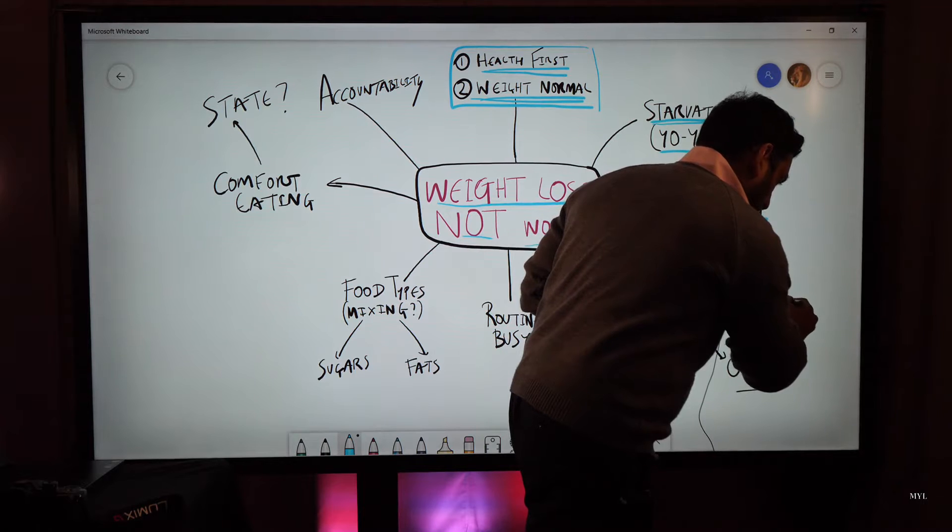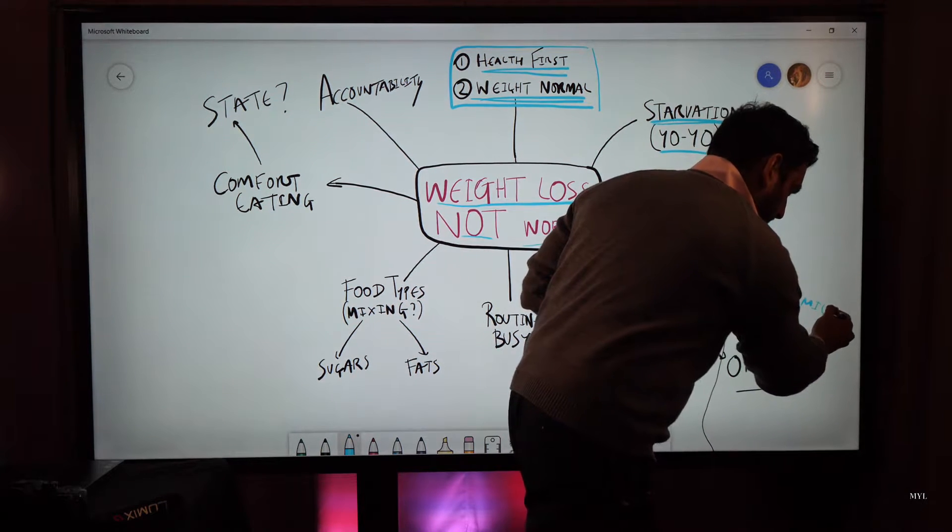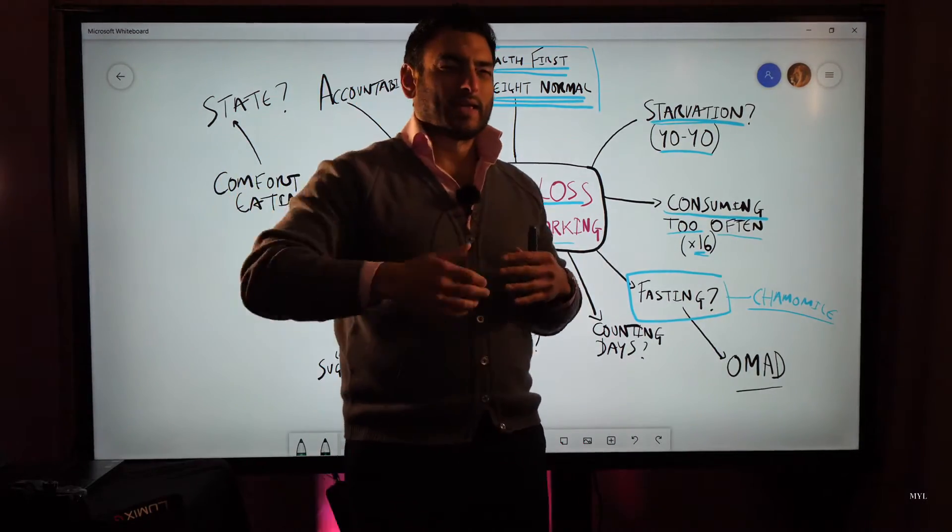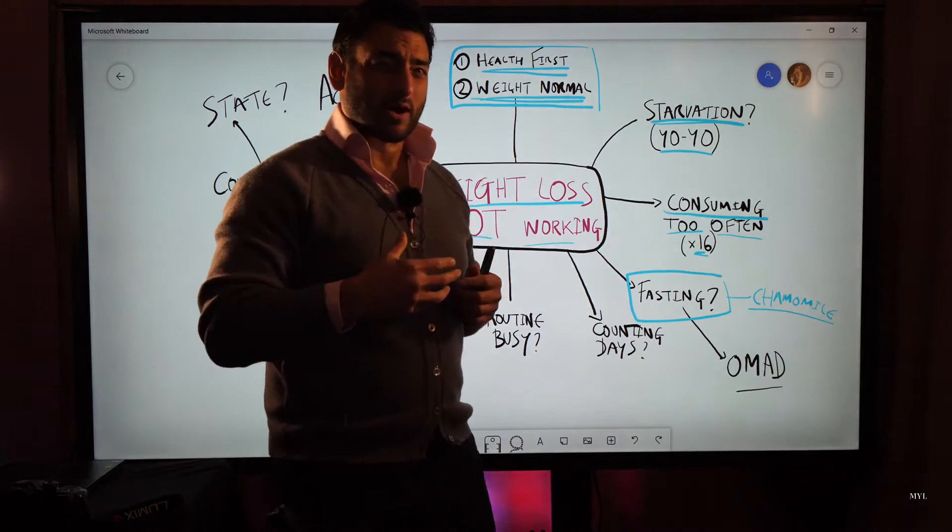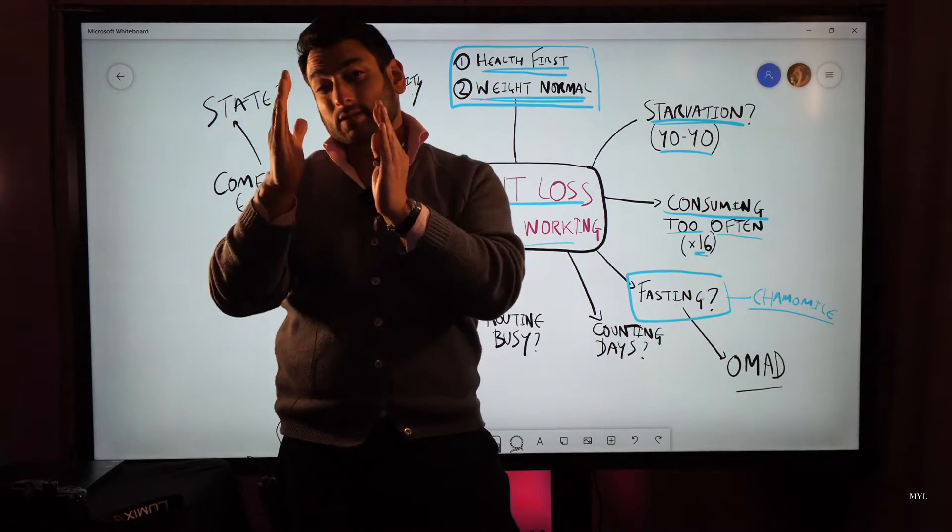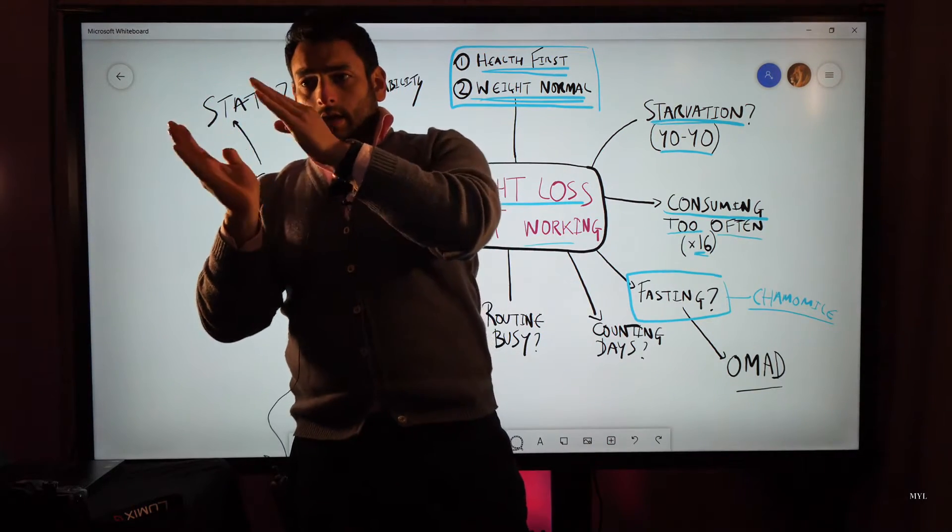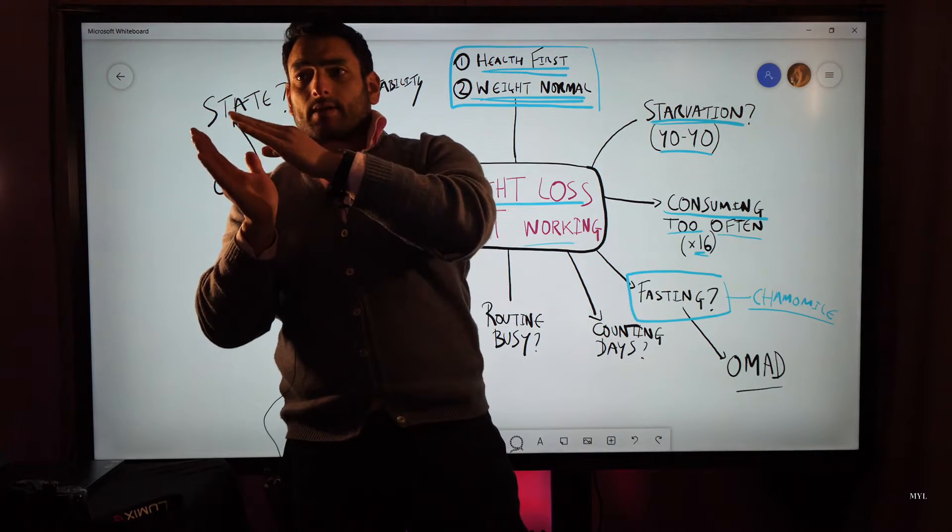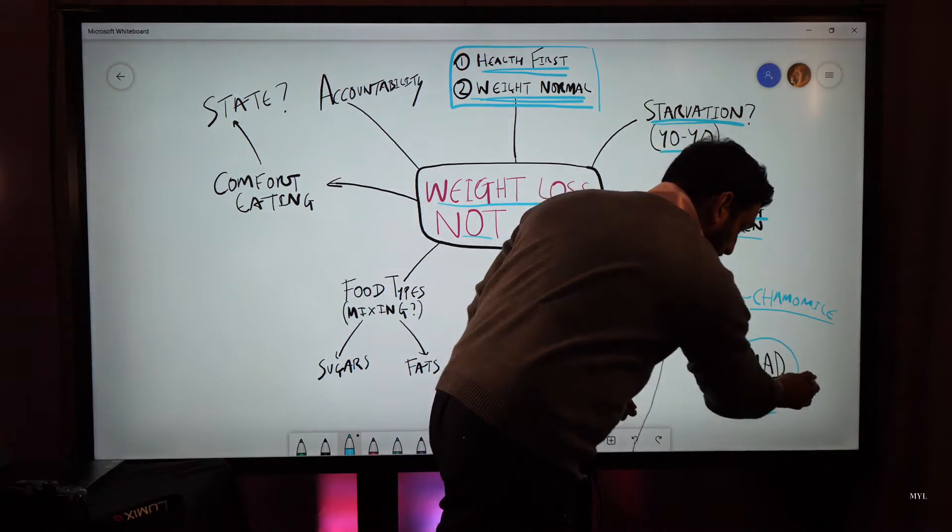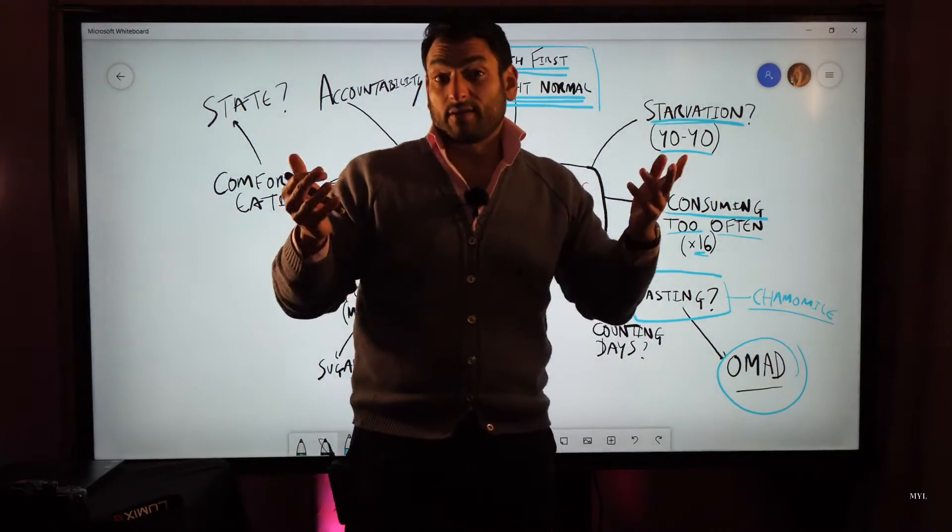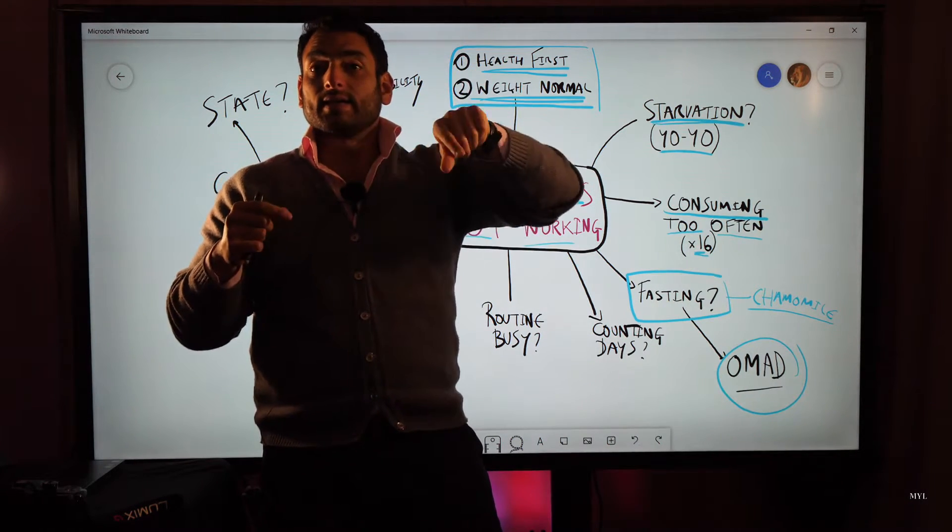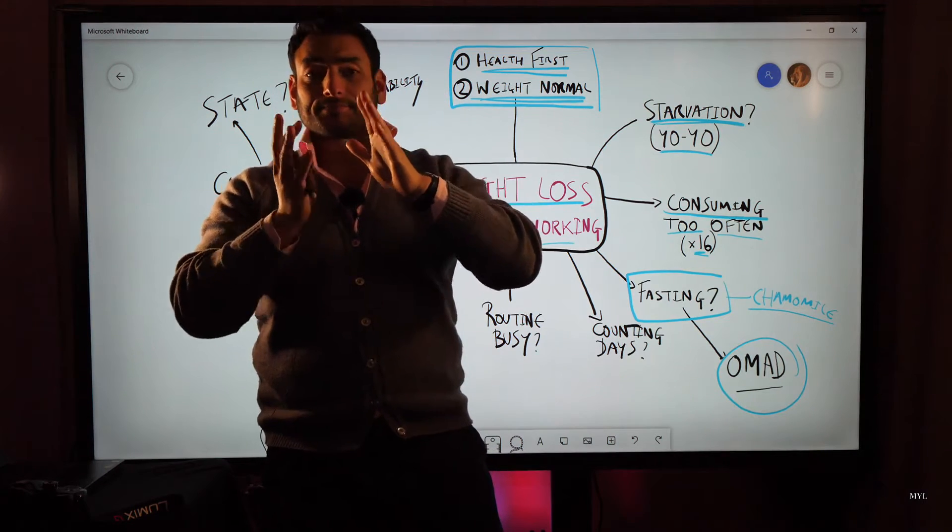Get a bit of chamomile tea down you. Just going back to the fasting, you want to get your eating down to as late as possible, maybe work it into the late afternoon. Eventually you could be on the OMAD diet, which is one meal a day. Before you know it, you're fasting 22 to 23 hours per day and you've got this small window of eating. I think that's a fantastic way to transition.